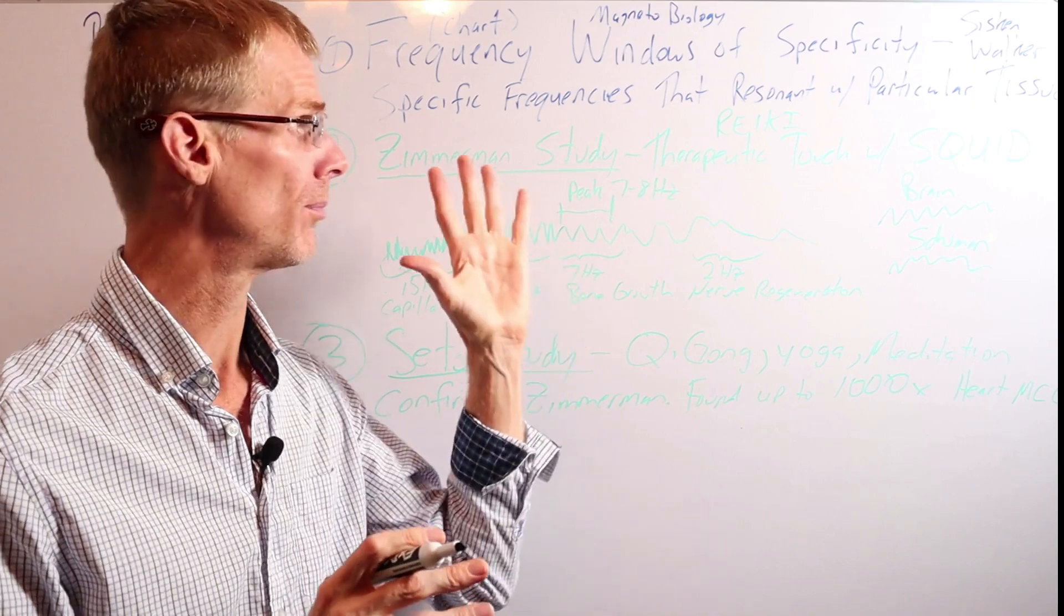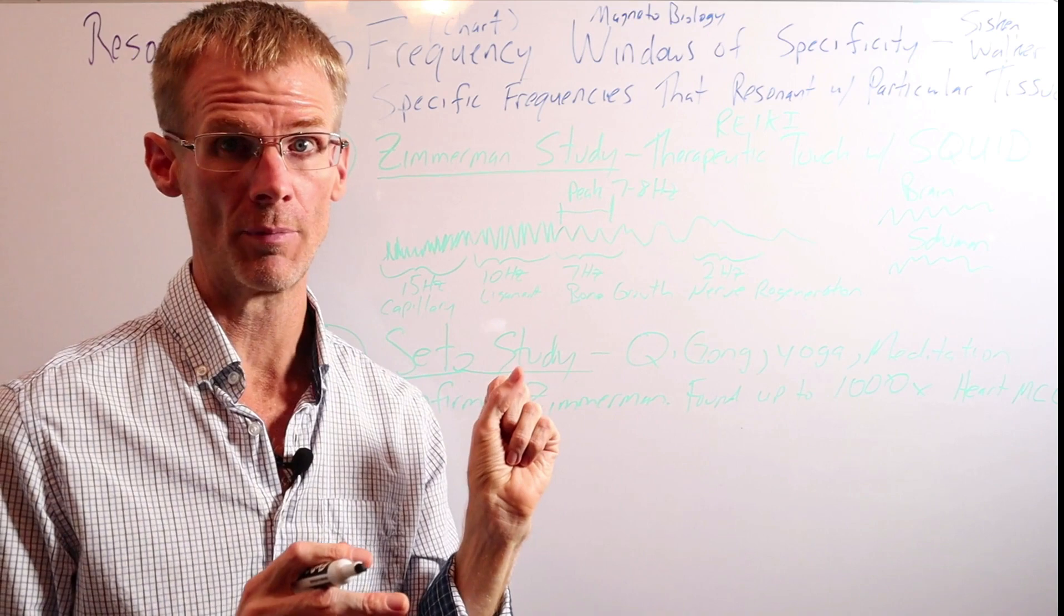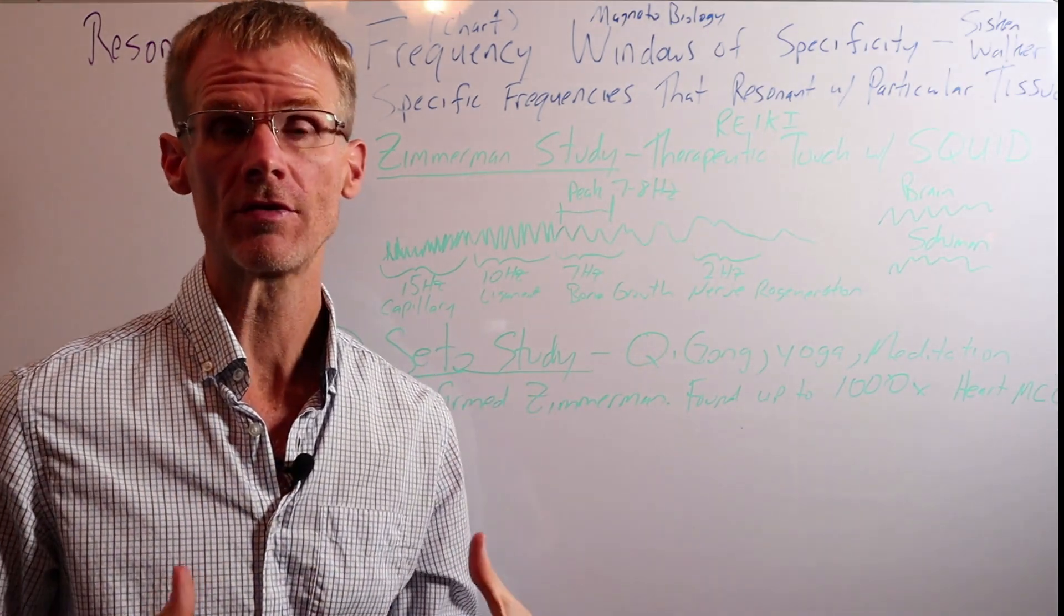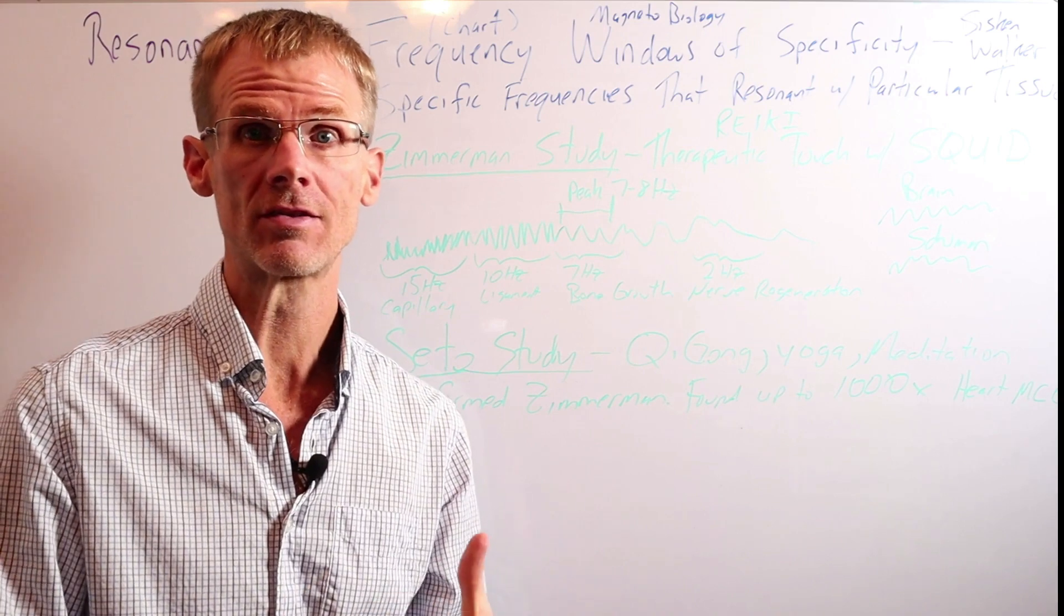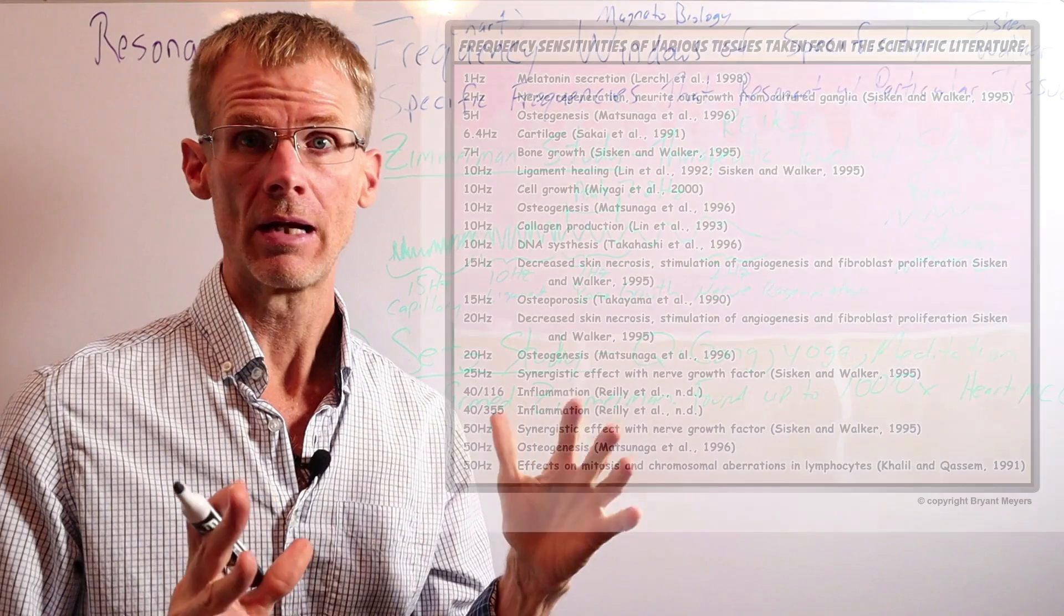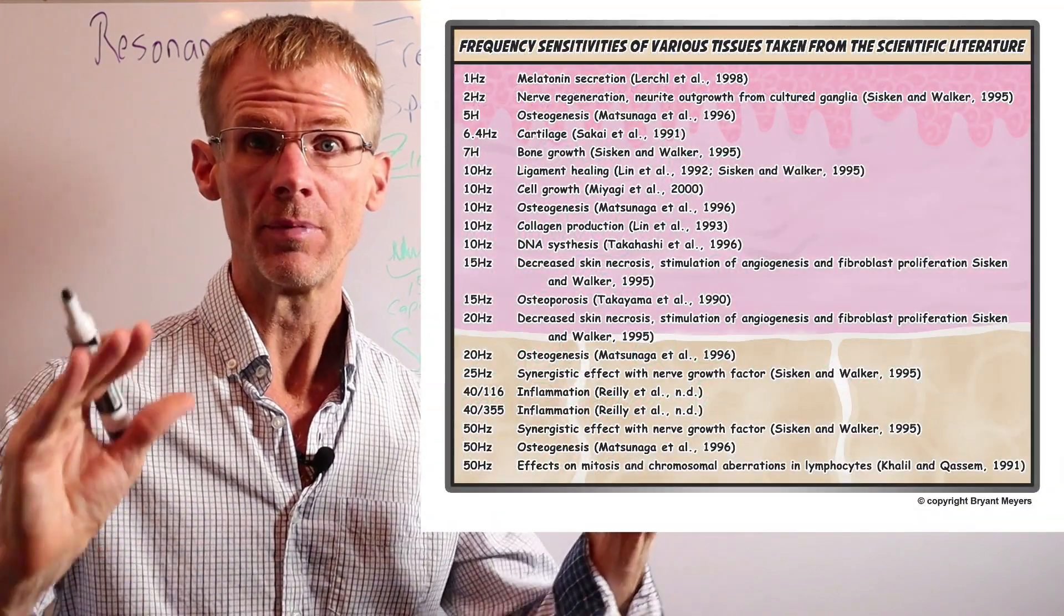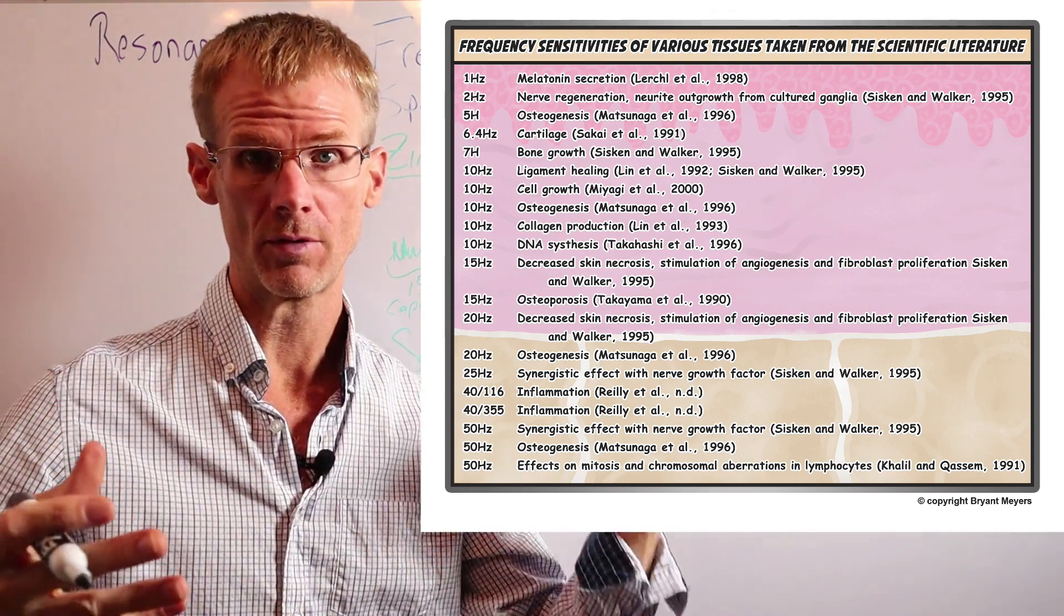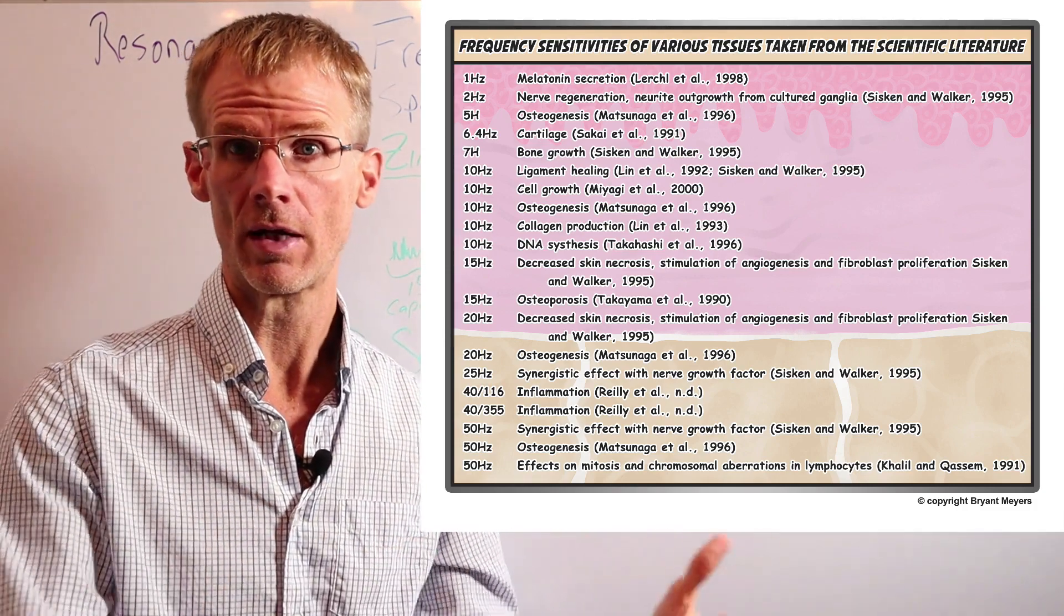So now I want to go through a couple things. First, I want to go through frequency windows of specificity. So this is magnetobiology. Magnetobiology has done some really good research to determine the resonant frequencies and the frequencies that different tissues and cells respond to. You know, Addie and Bowen, Siskin and Walker, Dr. Goodwin, the NASA study, and many others. And I want to show you this image here. I'm going to put it on the screen so you can just take a kind of a quick look at it. But this summarizes many years of research in PMF therapy, which is magnetobiology, to determine what are the best frequencies to apply to the human body.